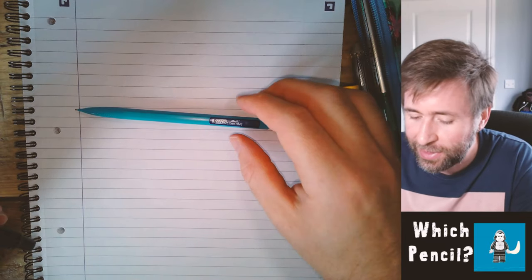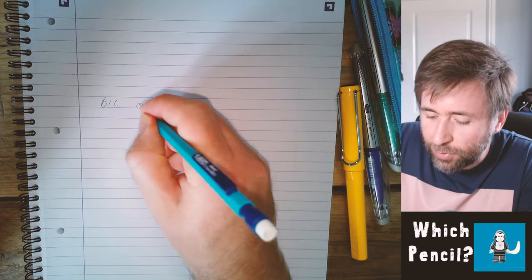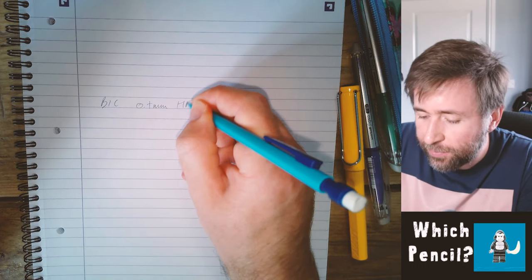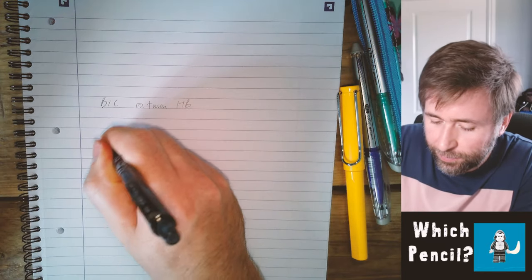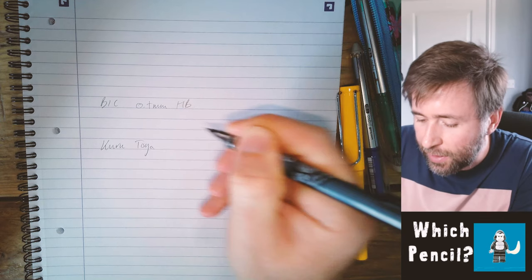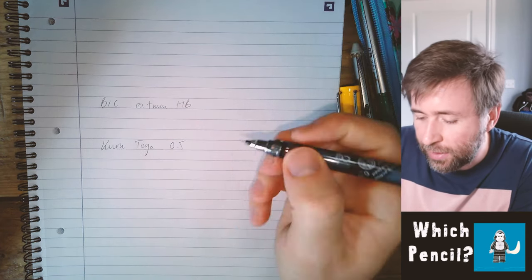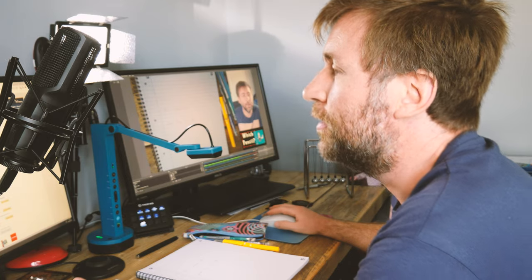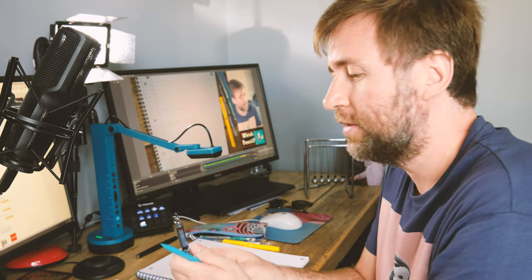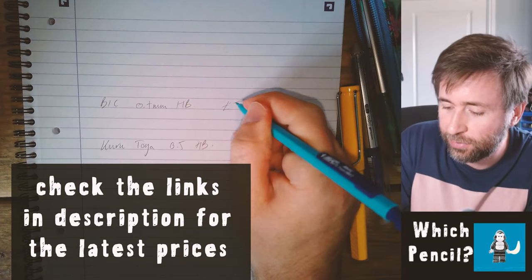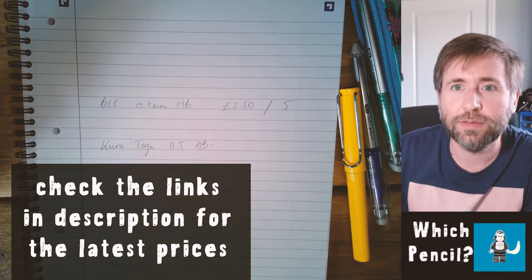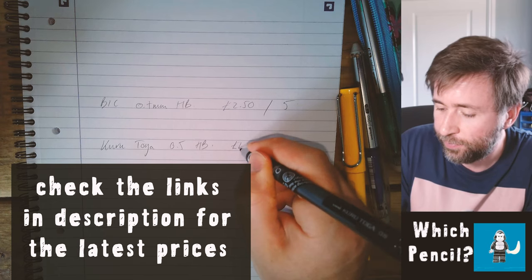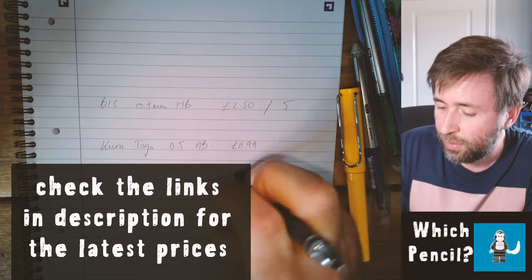This one is the Bic, 0.7mm and it's HB. And this one is the Kuri Toga, 0.5 in fact, and it's also HB. The difference is though that these cost £2.50 at the time of this review for a pack of five. And this Kuri Toga costs £11.99 for a pack of two. So why does it cost more and should you actually pay for that?